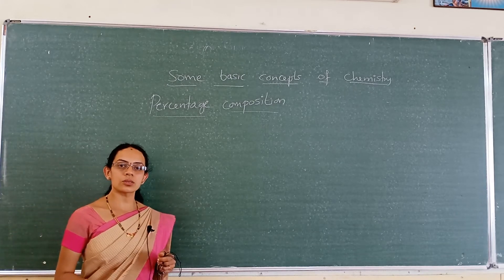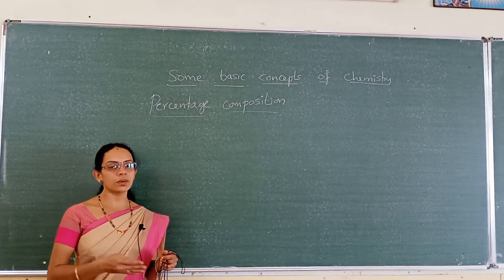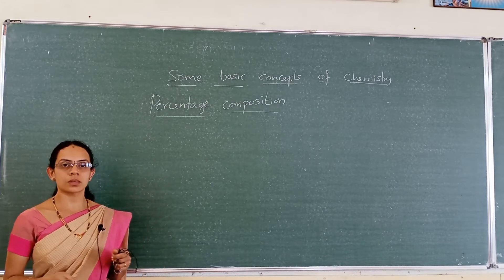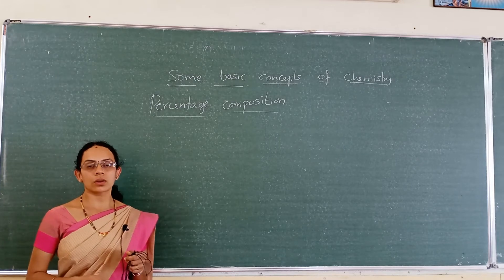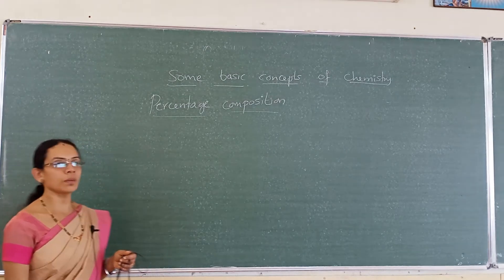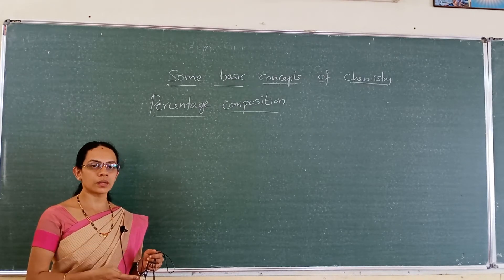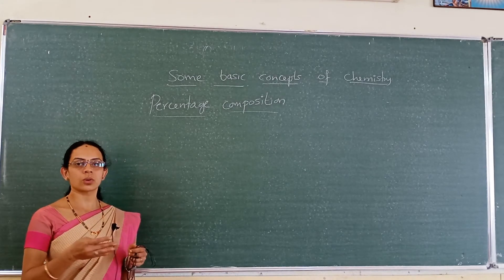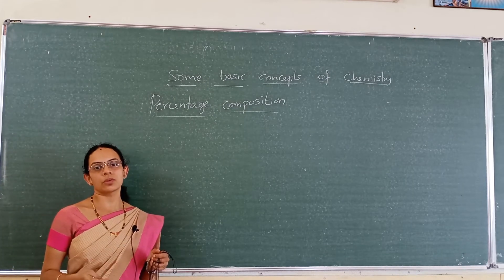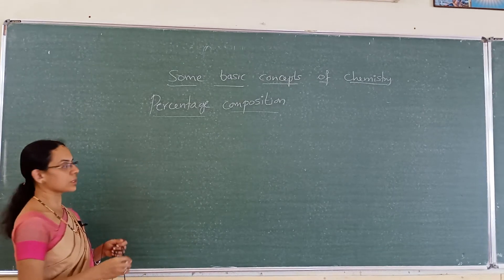Qualitative analysis means what are the elements present in the compound, and quantitative analysis means what are the percentages of these elements present in the given compound. So the first step is to find out the percentage composition. Once you find out the qualitative and quantitative analysis, next we can find out the empirical formula of the given compound.